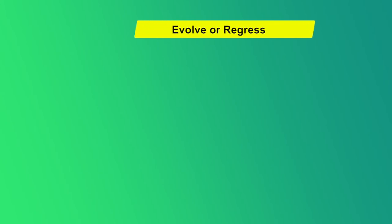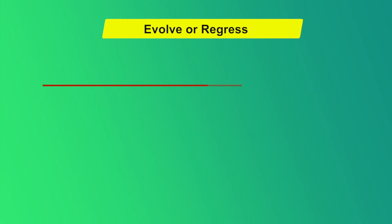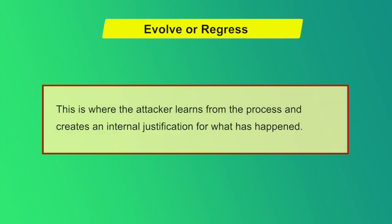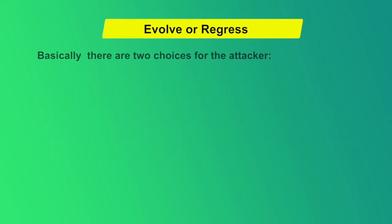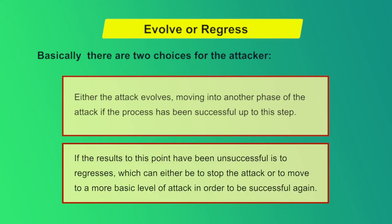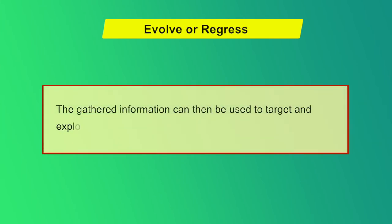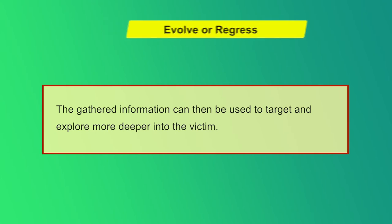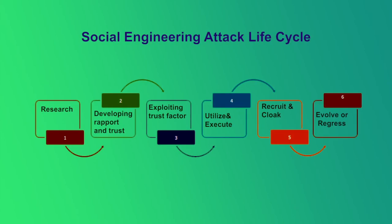The sixth and final step is Evolve or Regress. This is where the attacker learns from the process and creates an internal justification for what has happened. There are two choices: either the attack evolves, moving into another phase if the process has been successful, or if results have been unsuccessful, the attacker may stop or move to a more basic level of attack. The gathered information can then be used to explore more deeply into the victim until the attacker convinces the target to divulge the information needed to achieve the goal. These were the six phases of the social engineering attack cycle.